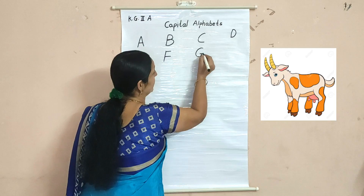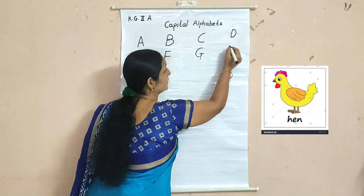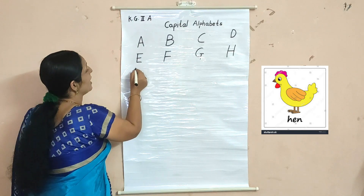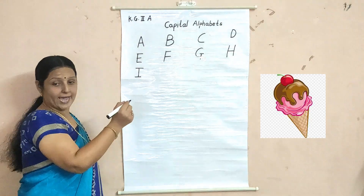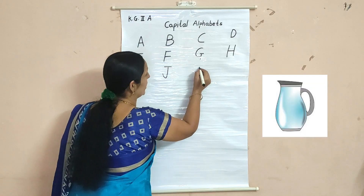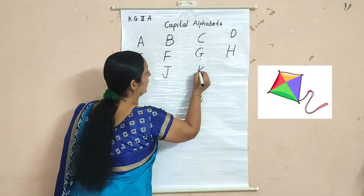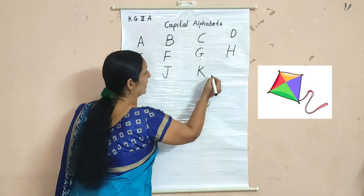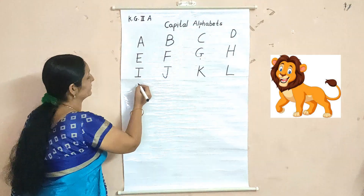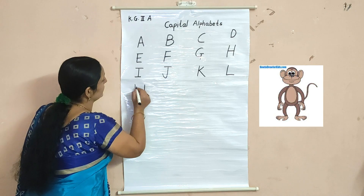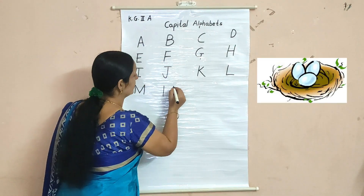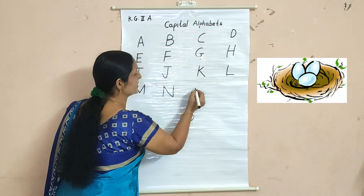G for goat, H for pain, I for ice cream, J for jug, K for kite, L for lion, M for monkey.